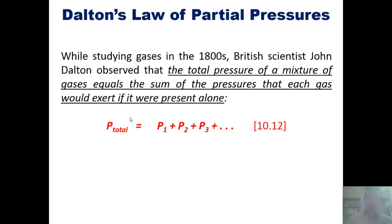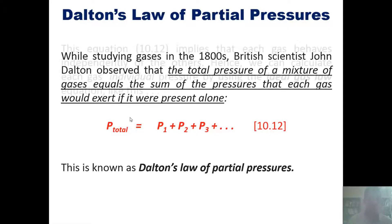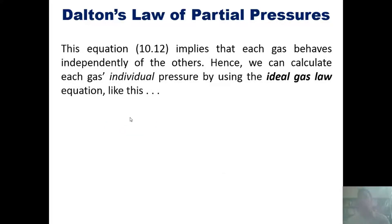This is known as Dalton's Law of Partial Pressures. This equation implies that each gas behaves independently of the others. Hence, we can actually calculate each gas's individual pressures by using the ideal gas law equation like this. Okay, this looks complicated, but the ideal gas equation, if rearranged to put pressure on one side and everything else on the other, looks like P equals n multiplied by RT divided by V.